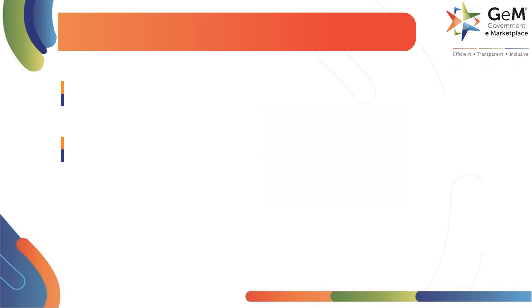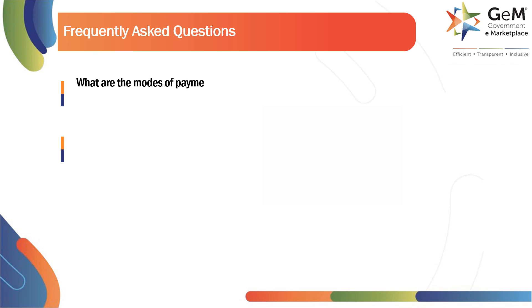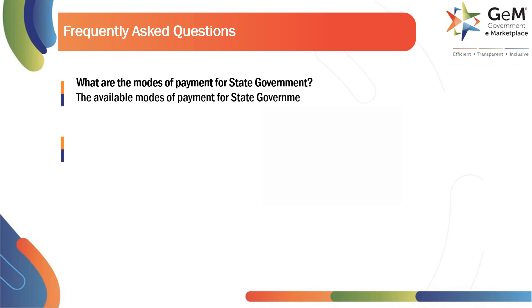Here are the frequently asked questions. What are the modes of payment for state government? The available modes of payment for state government are GPA, internet banking, IFMS, and state.